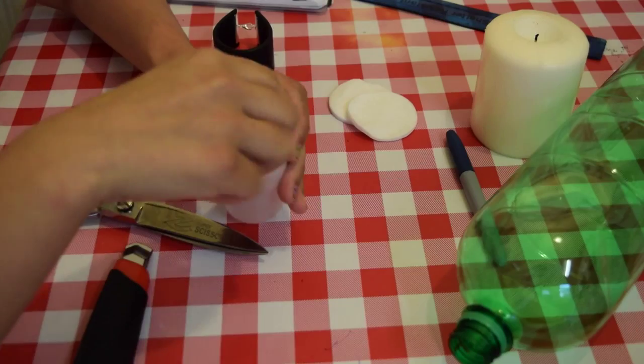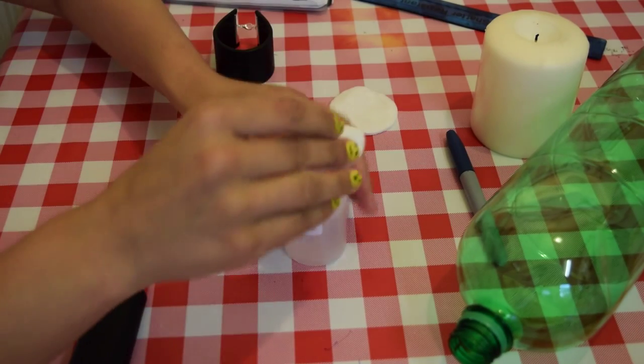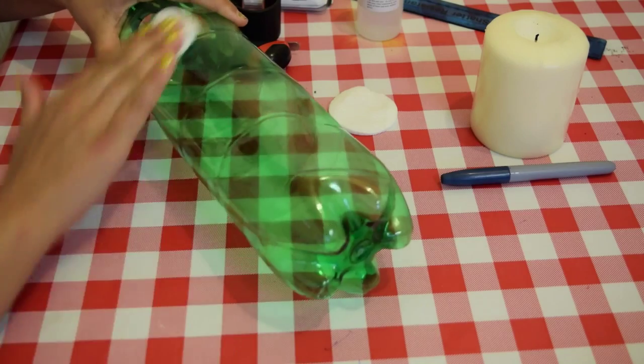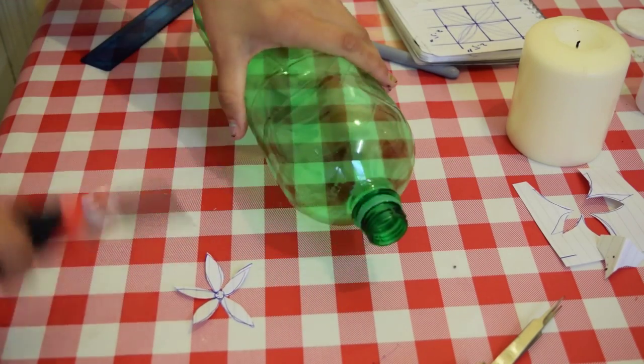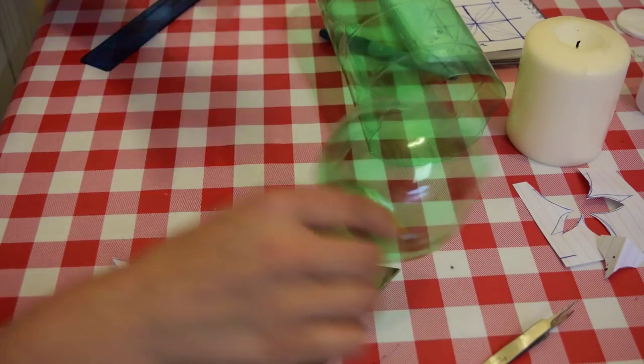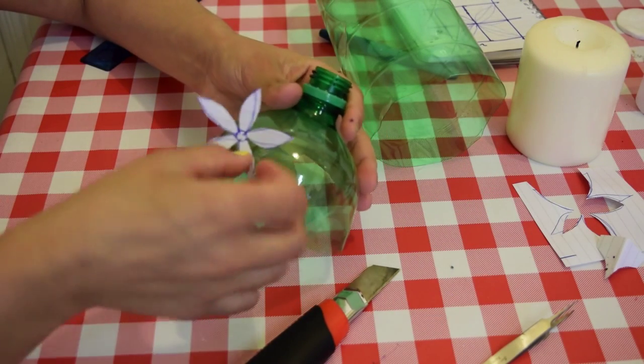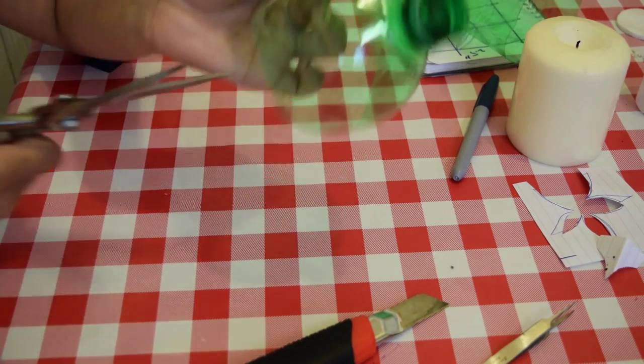Now grab your soda bottle. Wet a cotton pad with rubbing alcohol and remove all the stickiness from the bottle. Then you can cut your bottle. I'm going to use big scissors to make it easy. The top part of this bottle is cut. Let's place this template and cut out a piece.